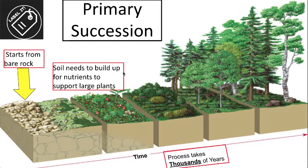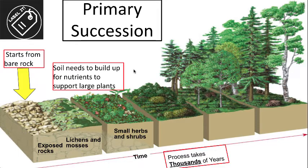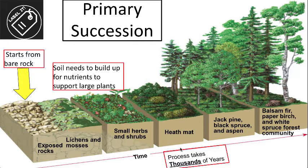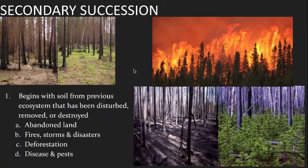We move on to soil needing to be built up to support larger plants, so we need pioneer organisms to do that job. Lichens and mosses will grow on the rock, secrete weak acids to break down the rock, and grow and die repeatedly to start building up a foundation of living material. At that point, grasses, small herbs, and shrubs can start to grow, forming a thicker vegetation layer to support more animal life. Then we get larger plants like jack pines and spruce, all the way up to balsam fir and paper birch. This process takes the longest — thousands of years — because we must build the soil before bigger organisms can grow.